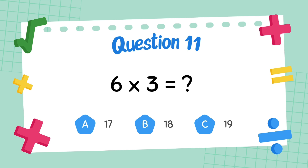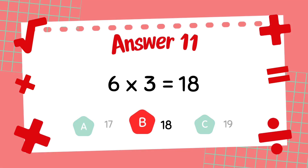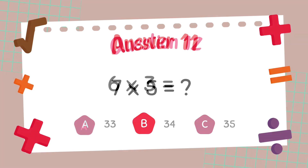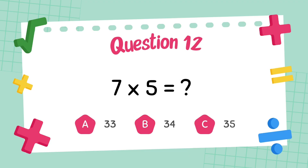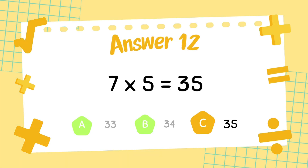What is 6 multiply 3? The answer is 18. What is 7 multiply 5? The answer is 25.